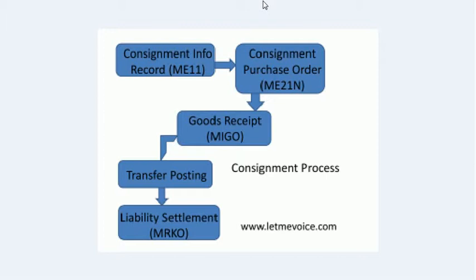Key features of vendor consignment: inventory or consignment stock is only valuated after it is consumed or withdrawn. Price is maintained in the purchase info record with info category set as consignment. The consignment material and regular stock material share the same material numbers, and goods receipt is always non-valuated.